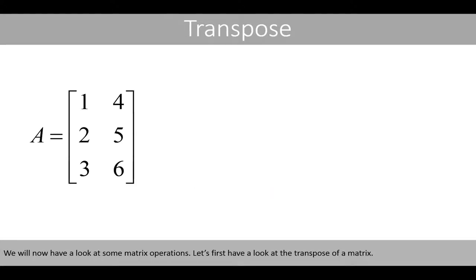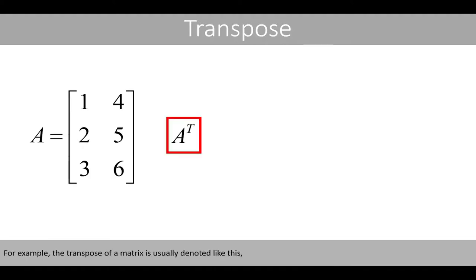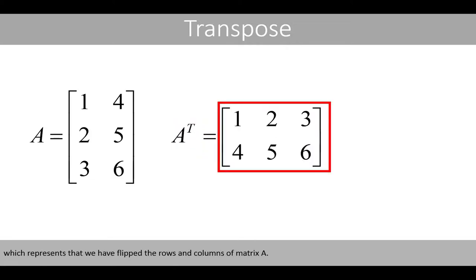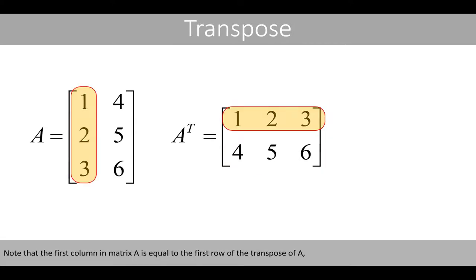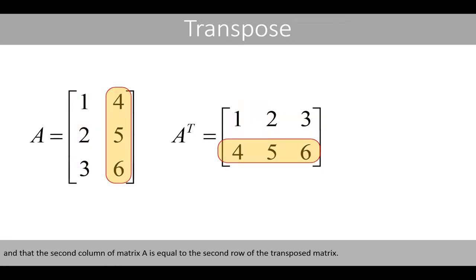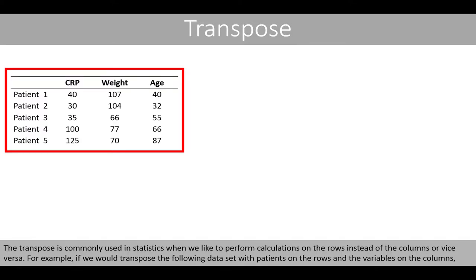We will now have a look at some matrix operations. Let's first look at the transpose of a matrix. The transpose of a matrix is usually denoted as A transposed, which represents that we have flipped the rows and columns of matrix A. Note that the first column in matrix A is equal to the first row of the transpose of A.